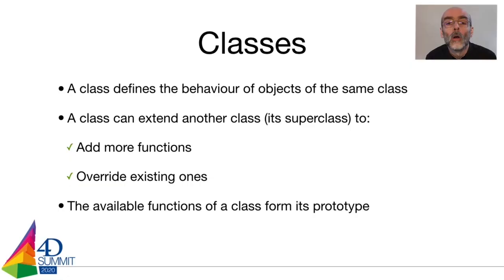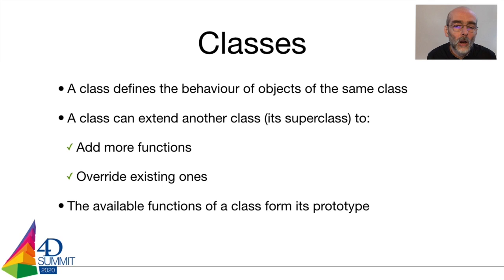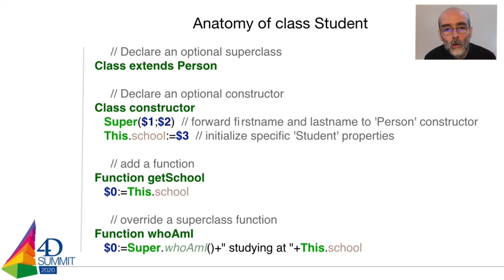As you have seen in the demonstration, classes are a set of functions which define the behavior of all objects of one particular class. A class can extend another class — named its super class — to add more functions or override existing ones. All the functions available on a particular class is called its prototype. A typical class anatomy: in the same file, you can have one optional 'class extends' statement to declare the parent class; by default a class extends the built-in object class.